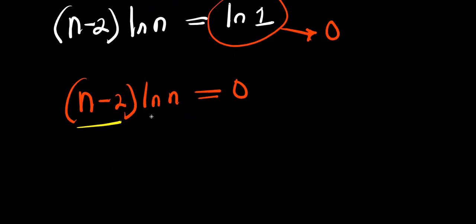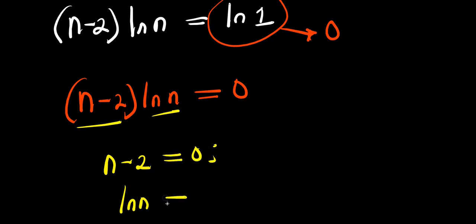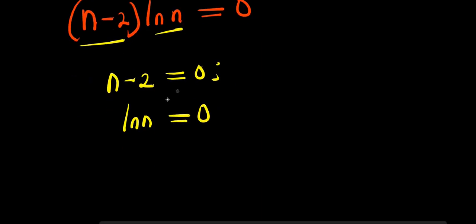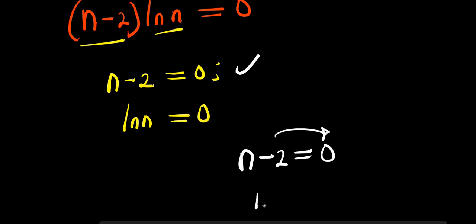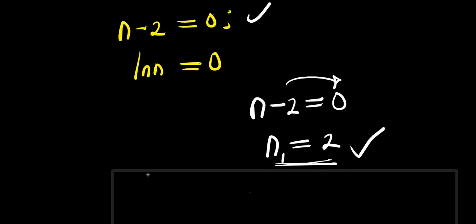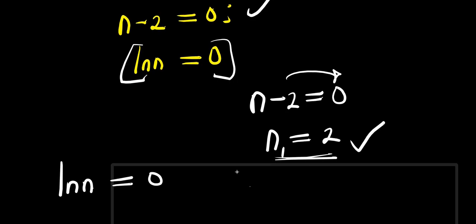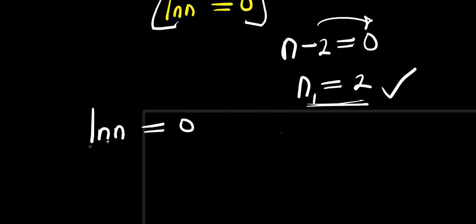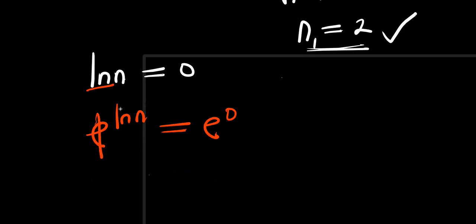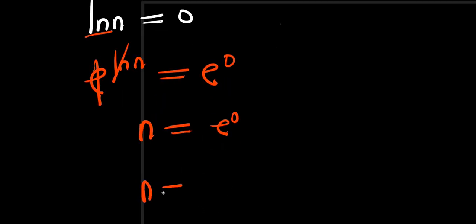I equate each factor to zero: n minus 2 equals 0 and natural log of n equals 0. Solving n minus 2 equals 0 gives n equals 2 — that's n₁. For natural log of n equals 0, I write e power natural log of n equals e power 0, so n equals e power 0, which is 1.